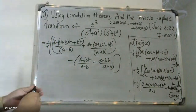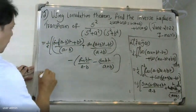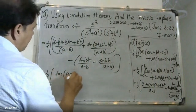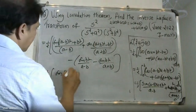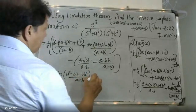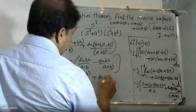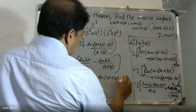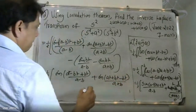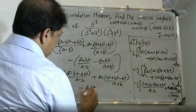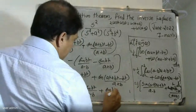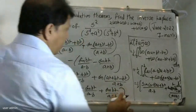Substituting the limits, the expression becomes (1/2) · [sin(at − bt + bt)/(a − b) + sin(at + bt − bt)/(a + b) − sin(bt)/(a − b) − sin(−bt)/(a + b)]. After cancellation, terms simplify to sin(at) and sin(bt).